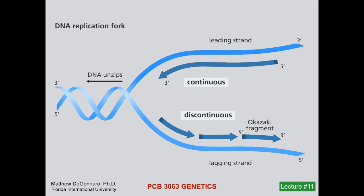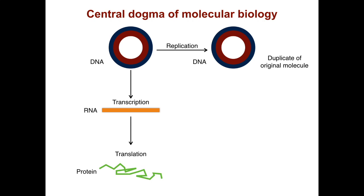DNA replication is one of the most fundamental processes in biology. It is necessary to maintain the integrity of the genome during cell division. Mistakes in DNA replication can lead to disease but are also drivers of evolution. Today we're going to discuss how DNA replication occurs.